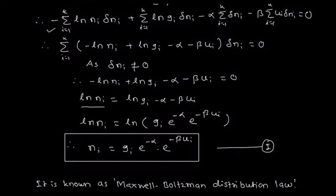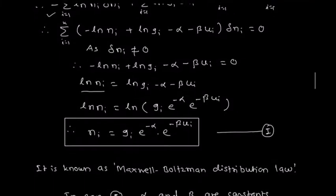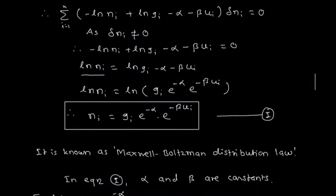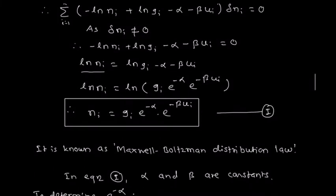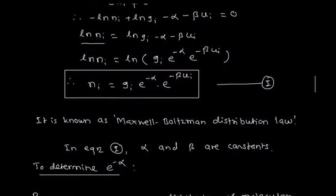This equation represents the most probable distribution of molecules among the various energy states, and that relation is known as the Maxwell-Boltzmann distribution law in terms of constants alpha and beta. The next step is to find the constants alpha and beta.